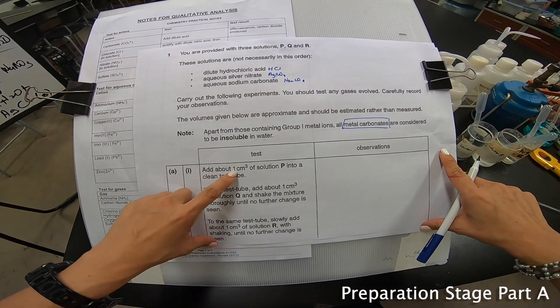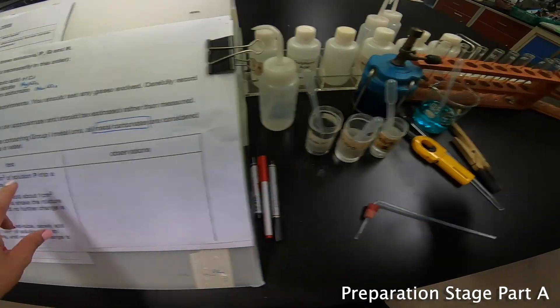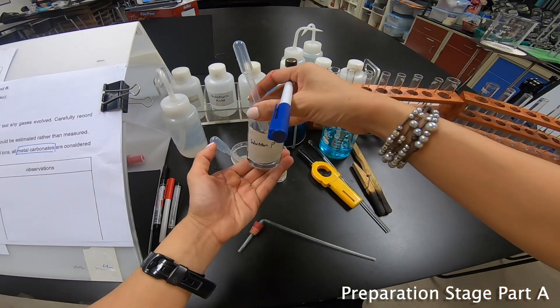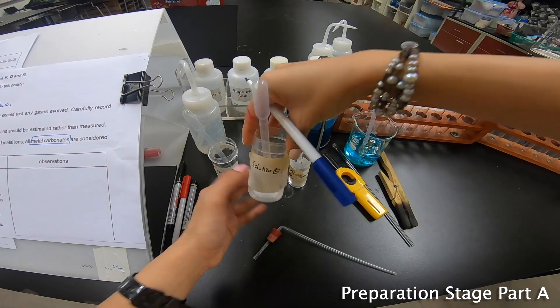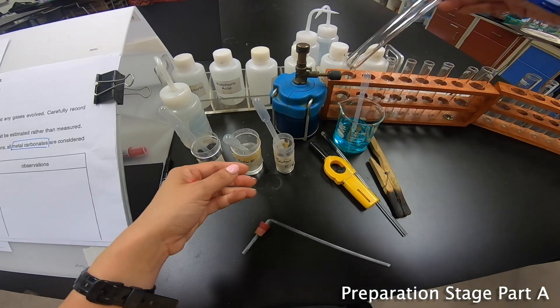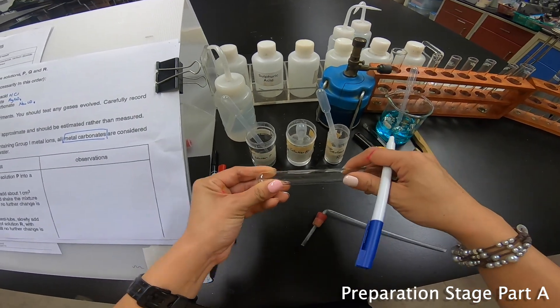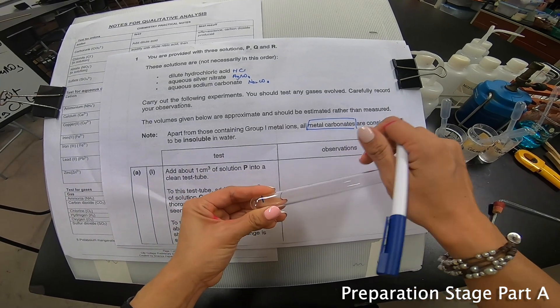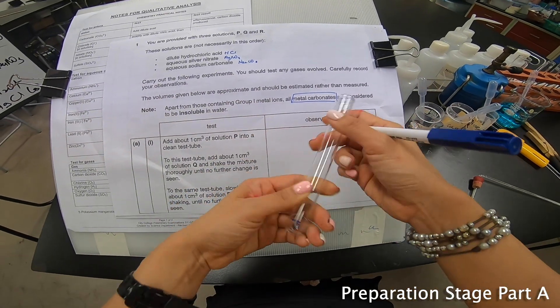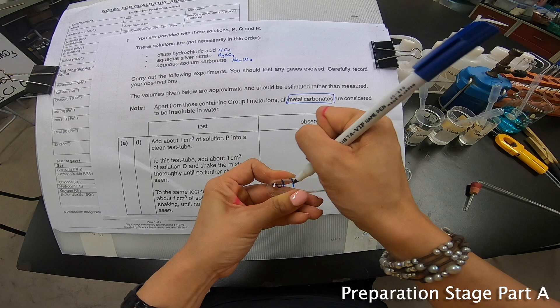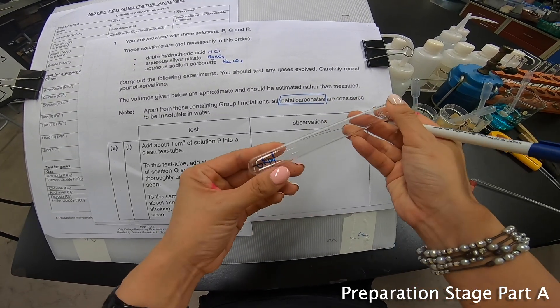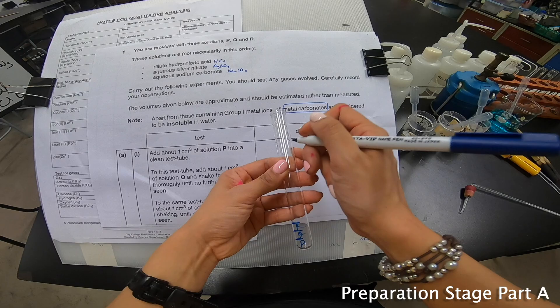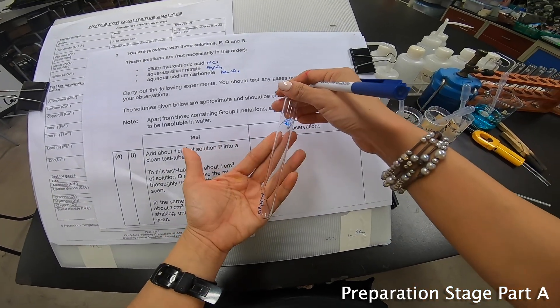Here says add about 1 cm³ of solution P into a clean test tube. These are all the test tubes given. I have with me P, Q, and R. So right now, let's do the preparation. I need to prepare a 1 cm³ of P. This is 2 cm³, 1 cm³ of P. I just need to make sure that I label it P. And another 1 cm³ of Q. And then another 1 cm³ of R.